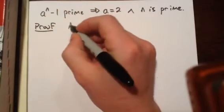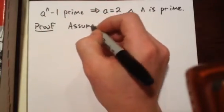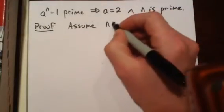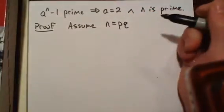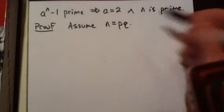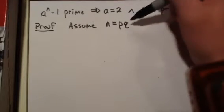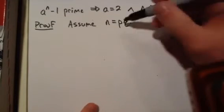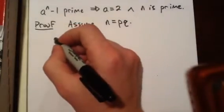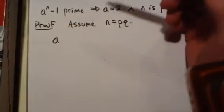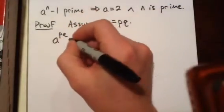First, assume n is not prime. So n is equal to pq. It doesn't matter if these are primes. We'll just say it's any composite number. Then we're going to show that a to the n minus 1 is composite.